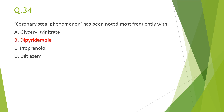Next: coronary steal phenomenon has been noted most frequently with — answer B, dipyridamole. It causes dilatation of autoregulatory resistant vessels in non-ischemic zones as well as ischemic zones, so blood flow gets diverted from the ischemic area to non-ischemic areas, further aggravating angina symptoms.